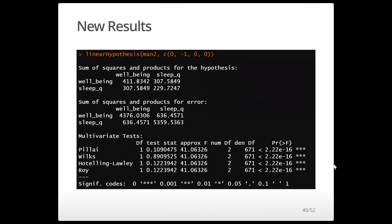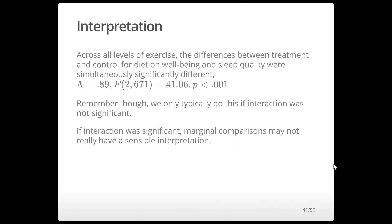Here's the full output and interpretation: across all levels of exercise, the differences between treatment and control for diet on well-being and sleep quality were simultaneously significantly different (lambda = 0.89). And remember, this is what we do typically only if the interaction is not significant. If the interaction is significant, we do cross comparisons; we do marginal comparisons only if the interaction is not significant.